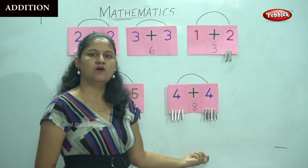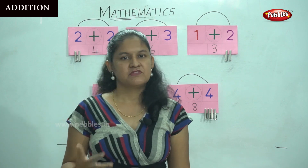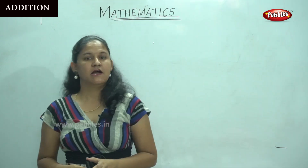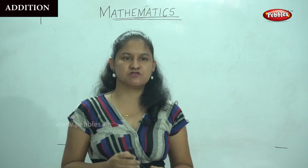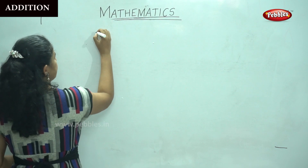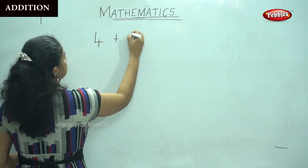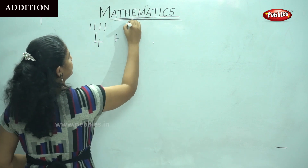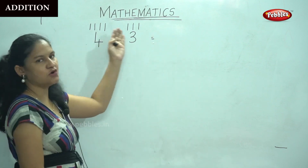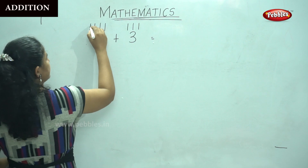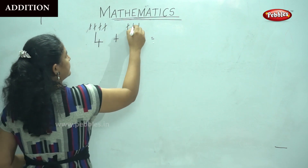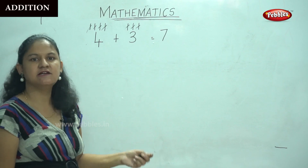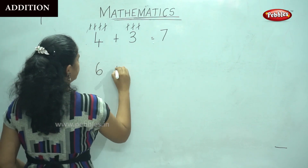We could either use pegs or fingers to do addition. There is another method — addition using strokes. For example, four plus three: I will put one, two, three, four strokes, and for three I will put one, two, three strokes. Adding all the strokes: one, two, three, four, five, six, seven — which gives me the answer seven. So four plus three gives me seven.